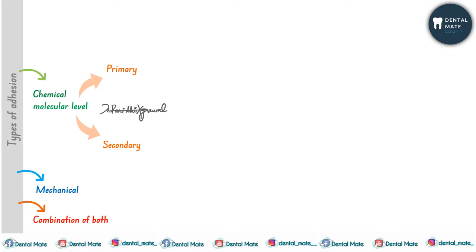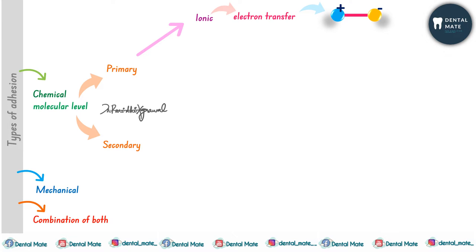The chemical type of adhesion could be divided into primary and secondary. Primary chemical adhesion is further divided into: first, the ionic bond, where there is a direct transfer of electron from one atom to another. For example, in the formation of salt, there is an electron transfer from sodium to chloride — Na+ and Cl- form an ionic bond, grouping further into crystals.